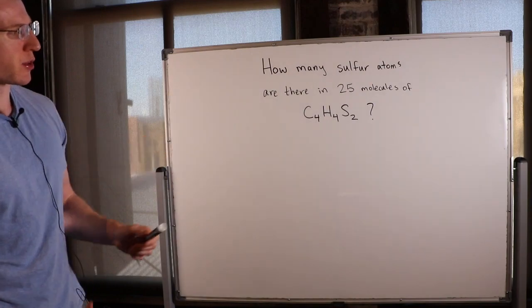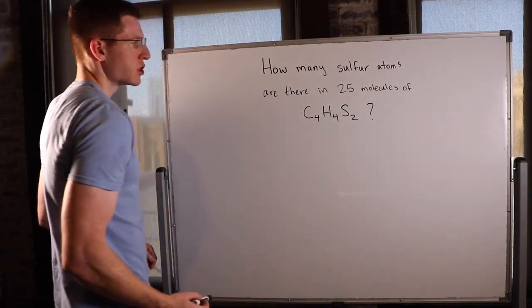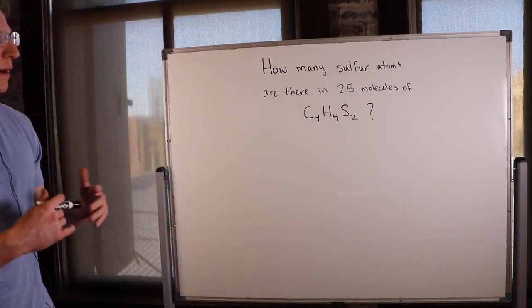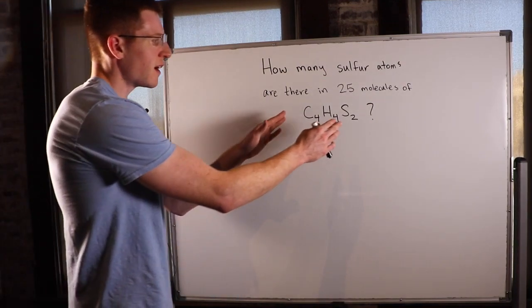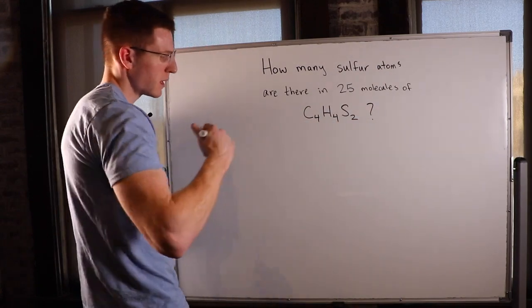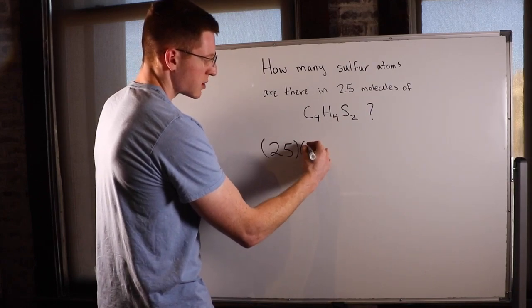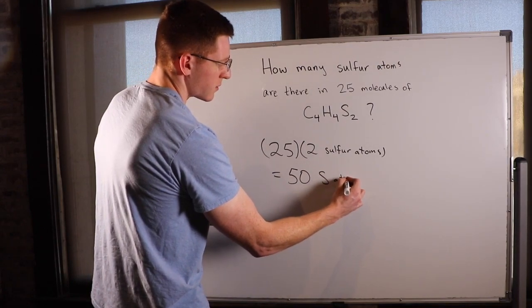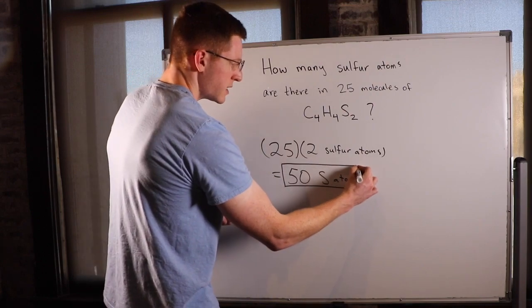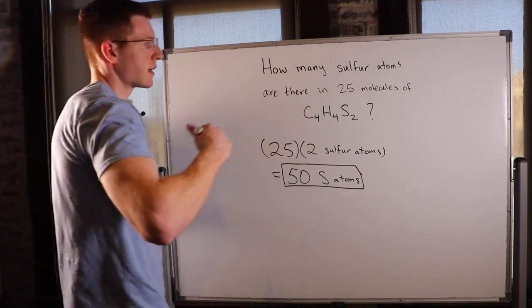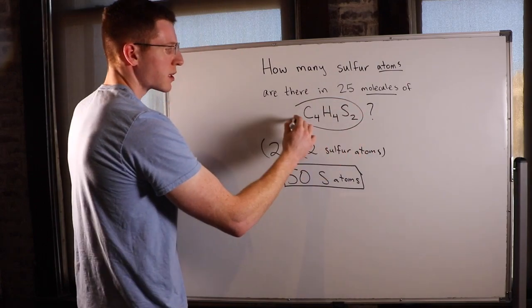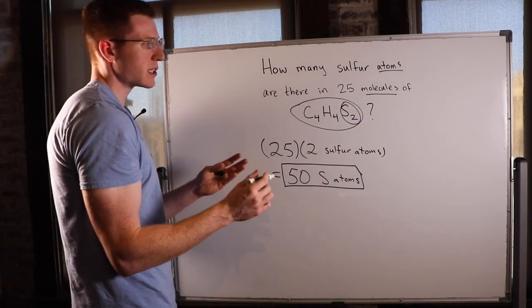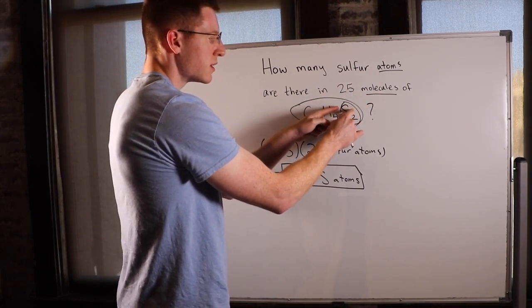This next example asks: how many sulfur atoms are there in 25 molecules of C4H4S2? We have 25 of these molecules floating around, and we want to know how many sulfur atoms there are total. Each one contains two sulfur atoms, so 25 molecules times two sulfur atoms gives us 50 total sulfur atoms. It's testing your understanding of the difference between atoms and molecules. For every one molecule of C4H4S2, we have two sulfur atoms, so for every 25 we have double — 50.